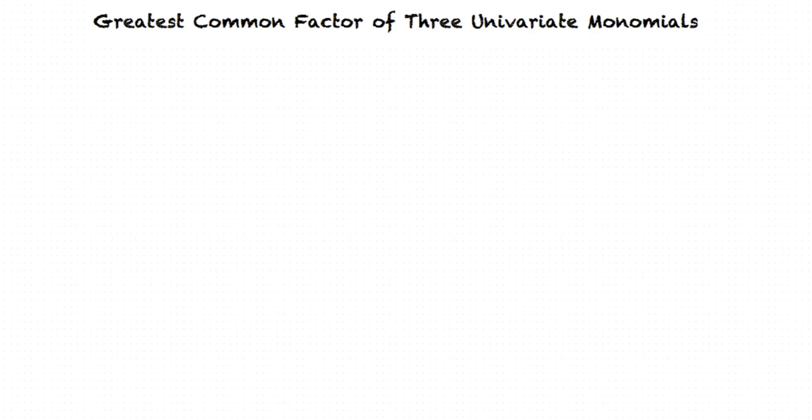This video will cover the topic: Greatest Common Factor of Three Univariate Monomials. The Greatest Common Factor refers to the largest number that divides exactly into two or more other numbers.